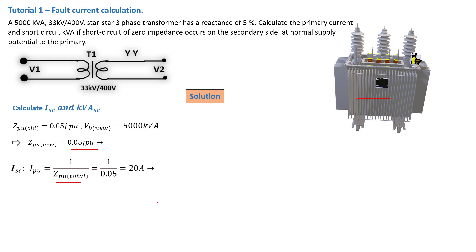When dealing with per-unit, we work with unity, so the 1 represents the per-unit voltage V_pu. This gives us I_pu = V_pu / Z_pu — which is simply Ohm's Law. Replacing the values, we find a per-unit current of 20 amps. Note that this is not the short circuit current yet — this is the per-unit current.